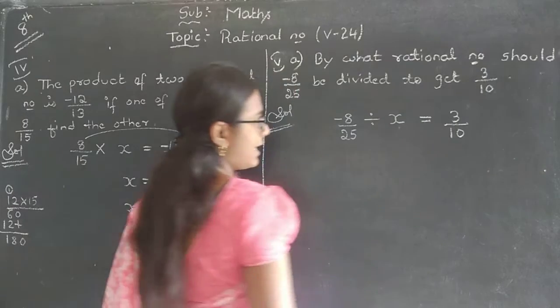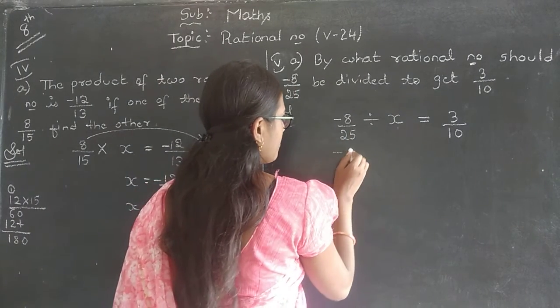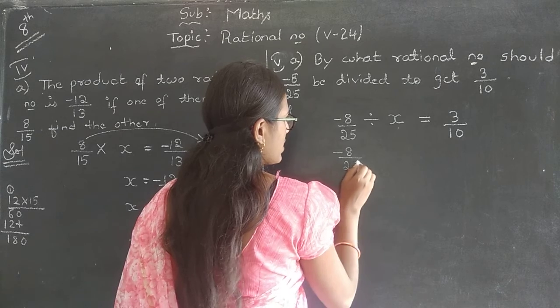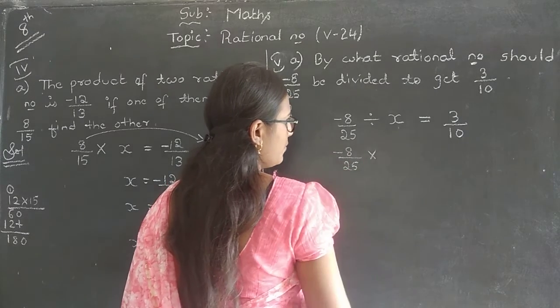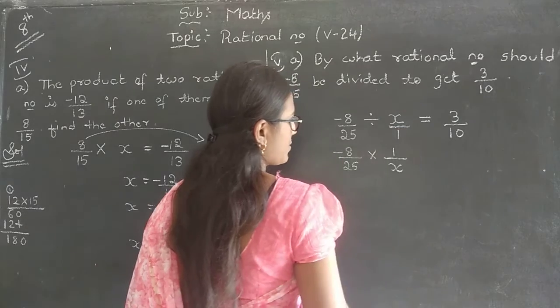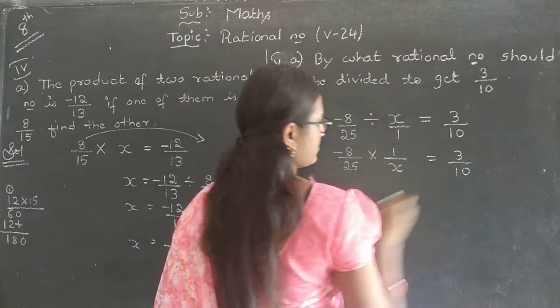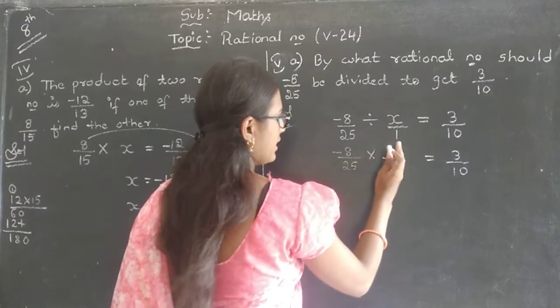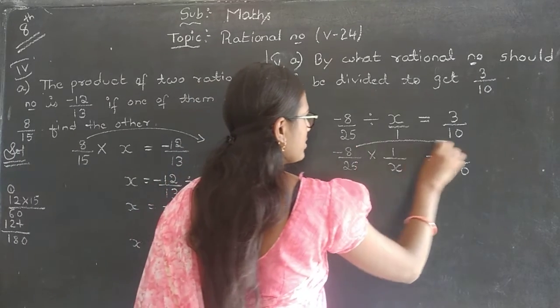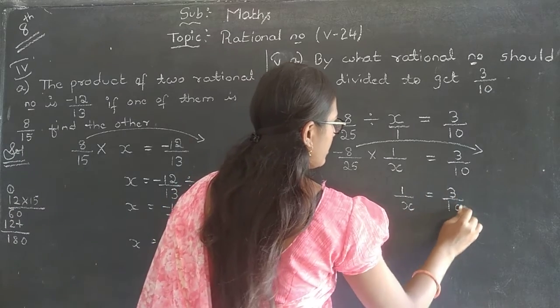To get it, it is nothing but is equal to 3 by 10. Let the divisor be x. Now, we shall find it. How to find a division of two rational numbers? First step is to change divided by into and x we need to take reciprocal. x by 1. On taking reciprocal, it will become 1 by x which is equal to 3 by 10.